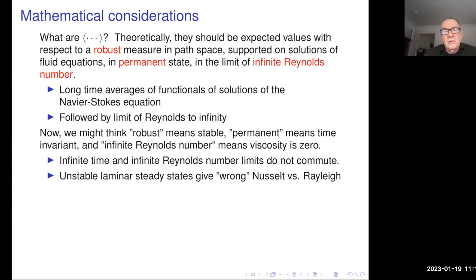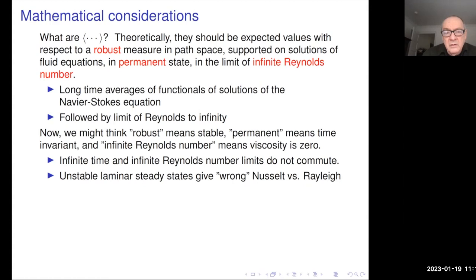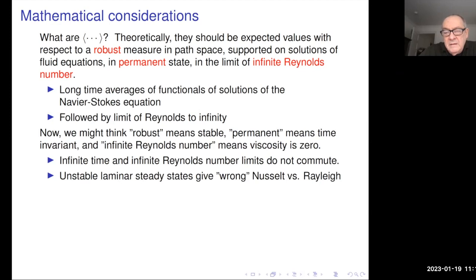Regarding robust: you may have invariant measures of Navier-Stokes that give you the wrong answer. In the particular case of the Taylor-Couette experiment — rotating a fluid between two cylinders — at any Reynolds and Taylor numbers, the rigid body solution is a solution, but it doesn't give you the correct or observed Nusselt number, which is the friction in the Taylor experiment. There will be the issue of perturbing some steady states and getting them to be quote-unquote typical, and we don't know what that means.